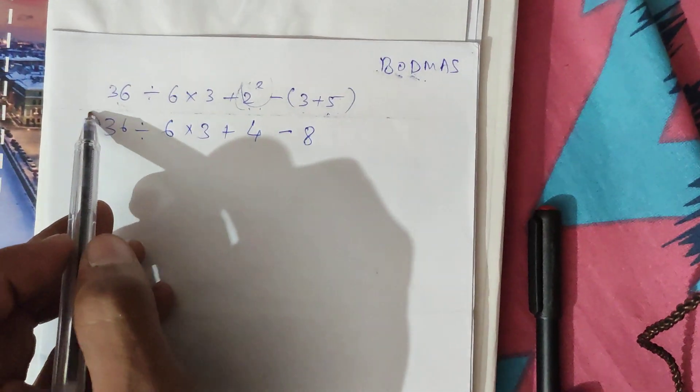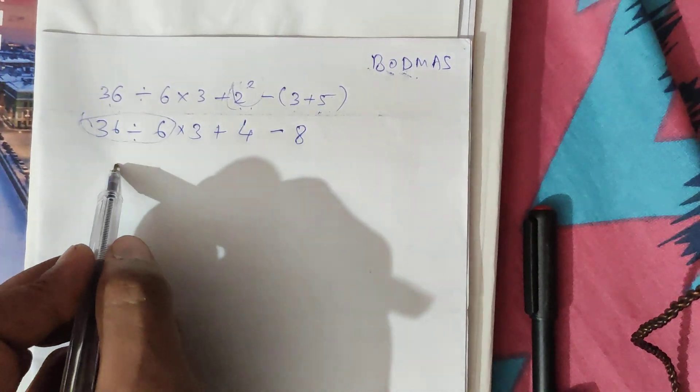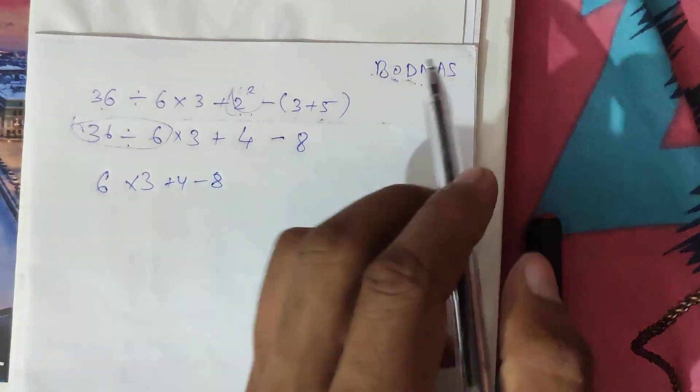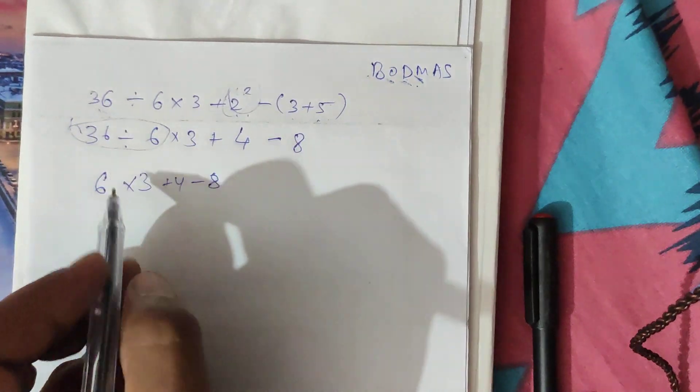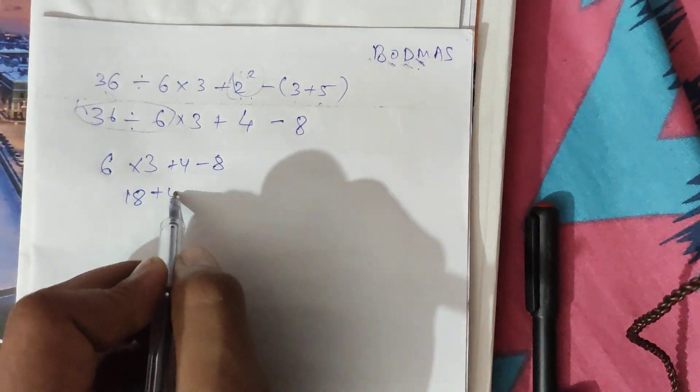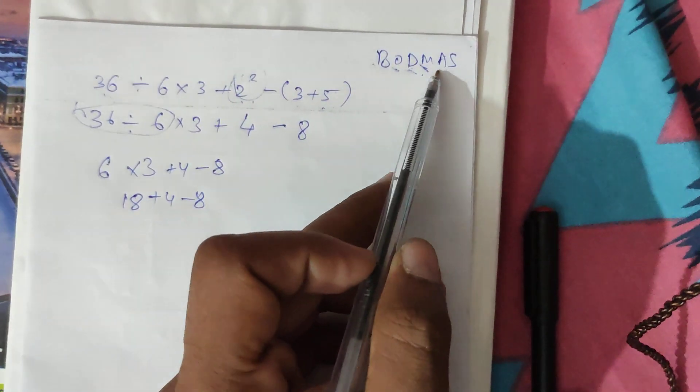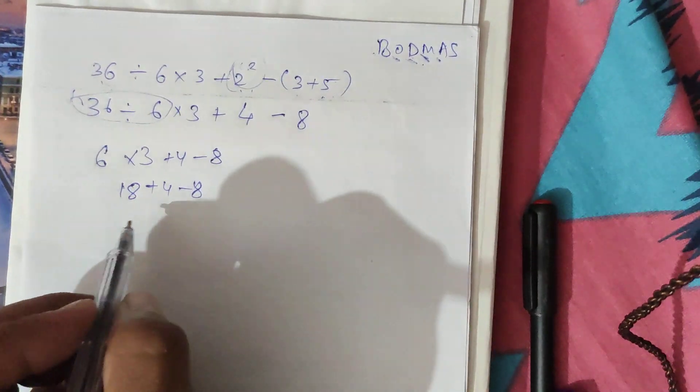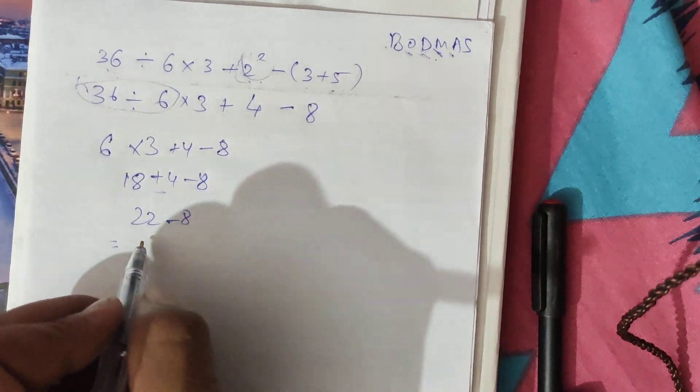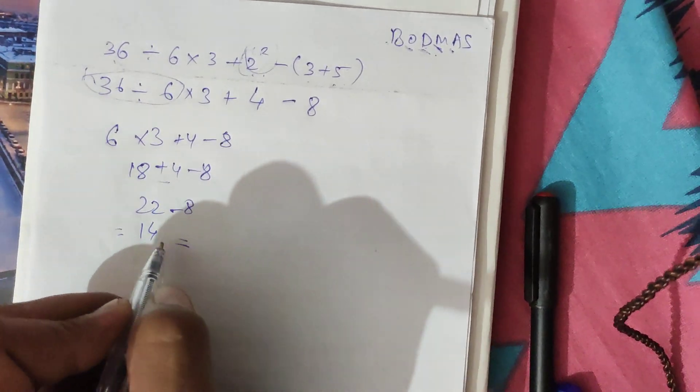So 36 divided by 6 is 6. Then we have multiplication and it becomes 18. Then we have addition, so it becomes 22 minus 8. We are getting 14 here.